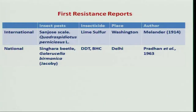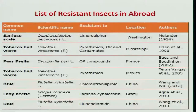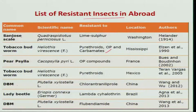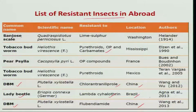The first resistance report internationally was in the case of lime sulfur on San Jose scale. Among cases abroad: tobacco budworm showing resistance to pyrethroids; diamondback moth (DBM) showing resistance to chlorfenapyr from China; lady beetle showing resistance to lambda-cyhalothrin from Brazil; and again diamondback moth from China. Like that, the number of insects showing resistance went on increasing.